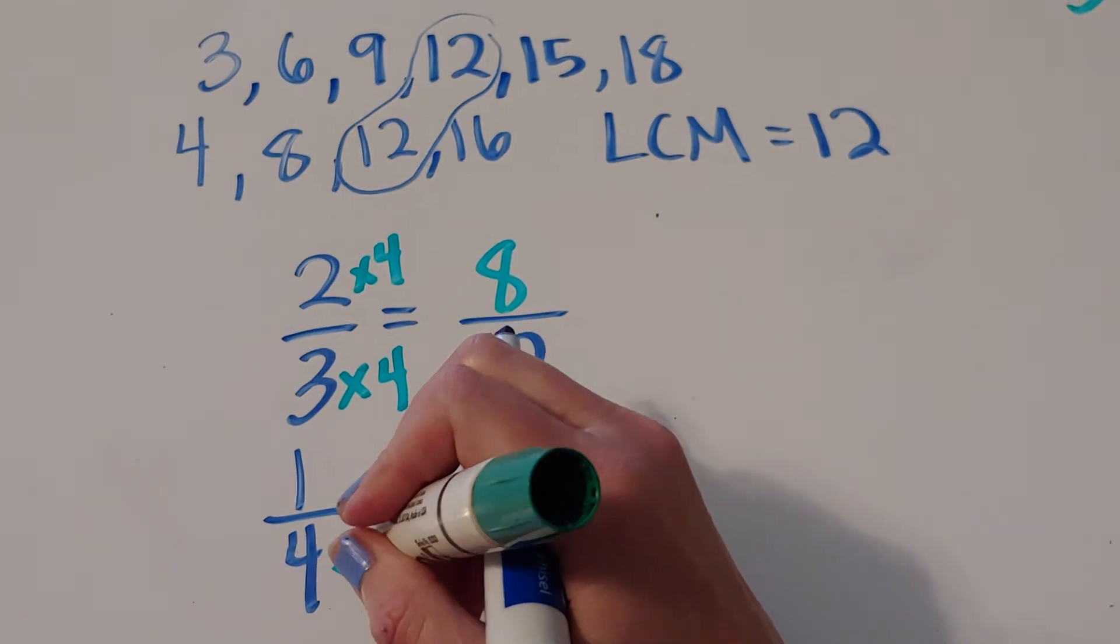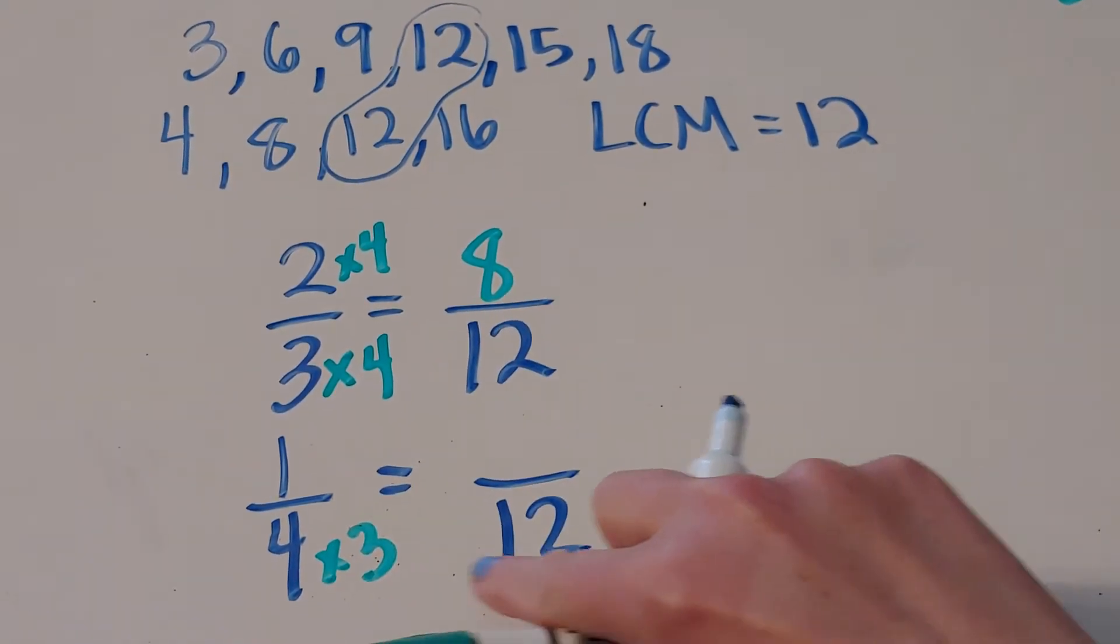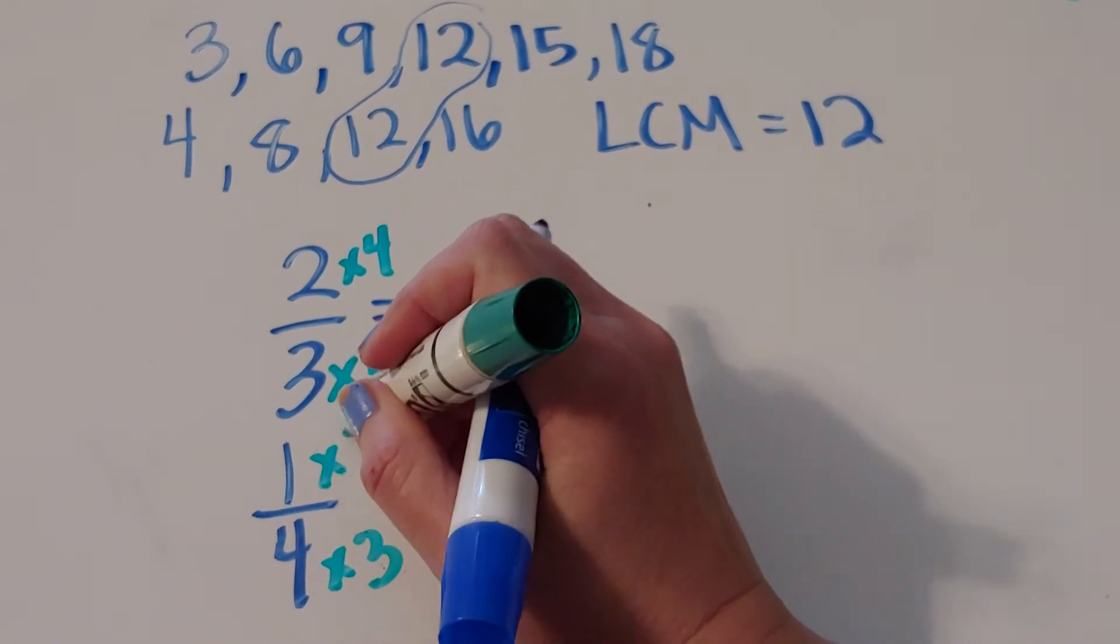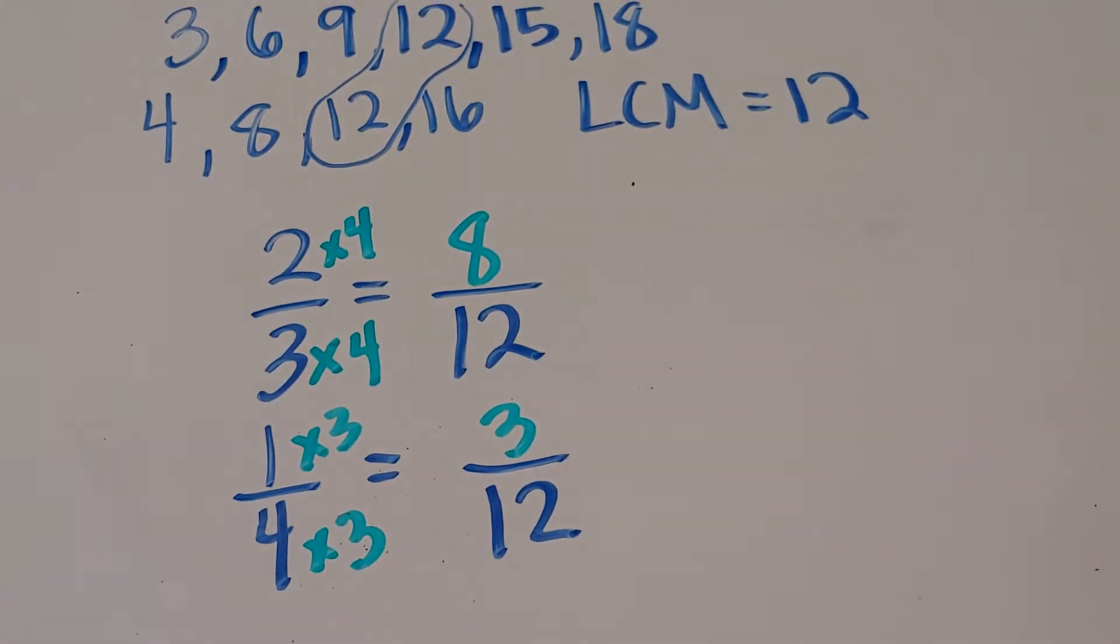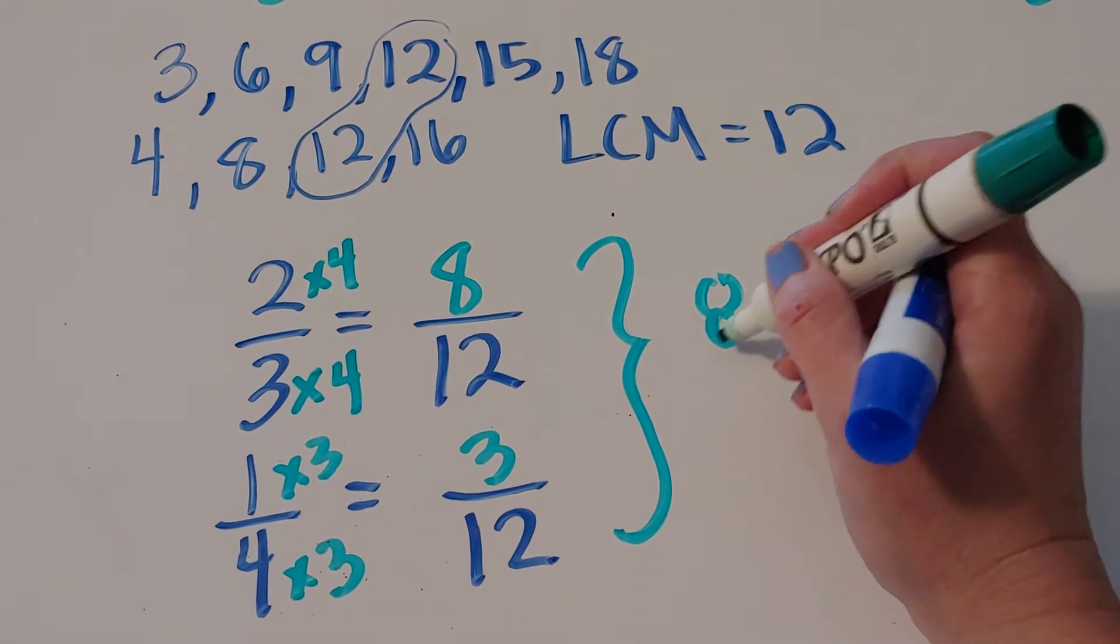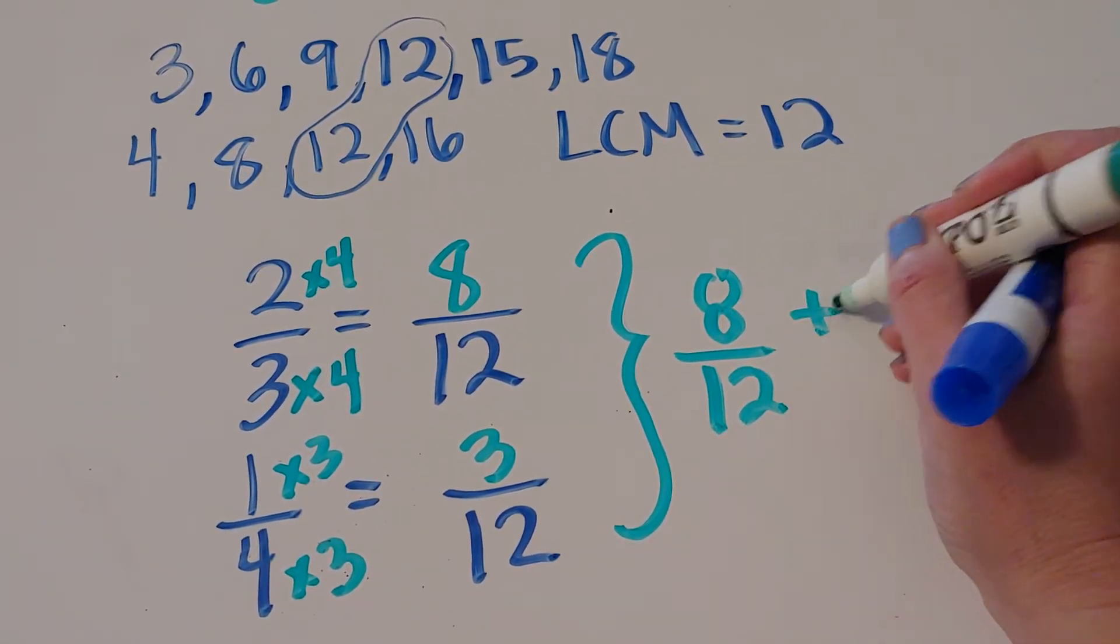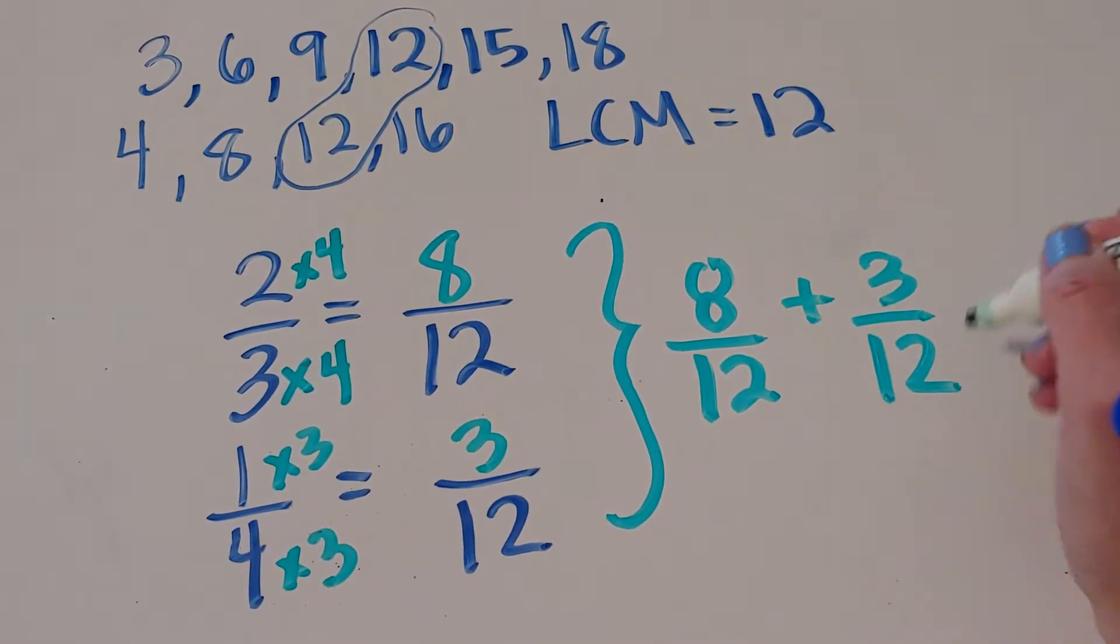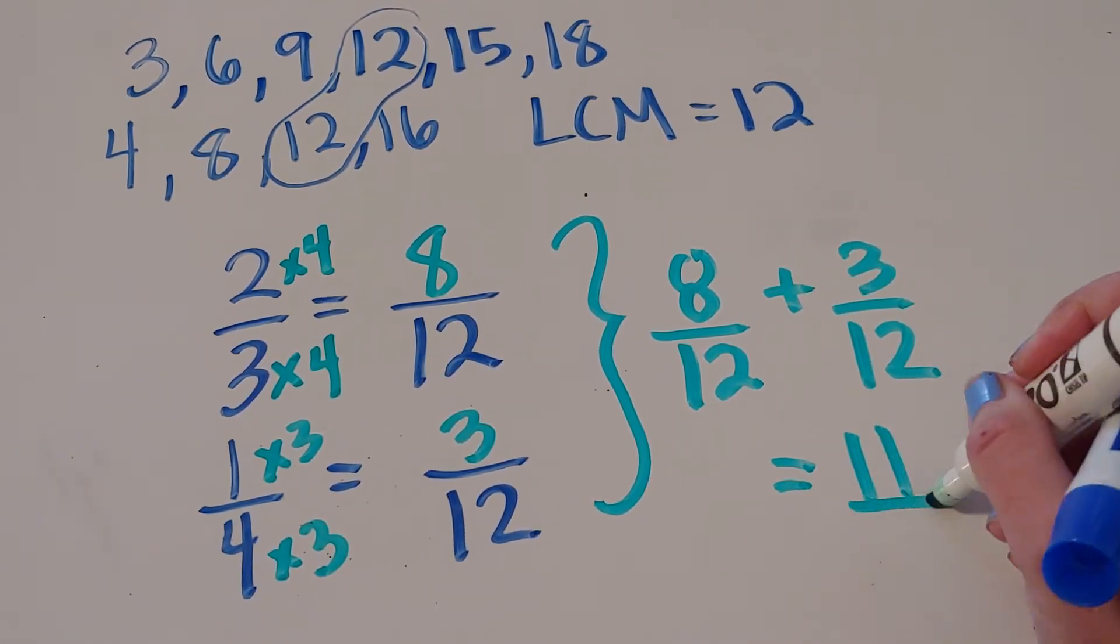And then when I do this one, 4 times what gets me to 12, and that's 3. So 1 fourth is the same thing as 3 twelfths. So this problem has turned into 8 twelfths plus 3 twelfths, which is the same thing as 11 twelfths.